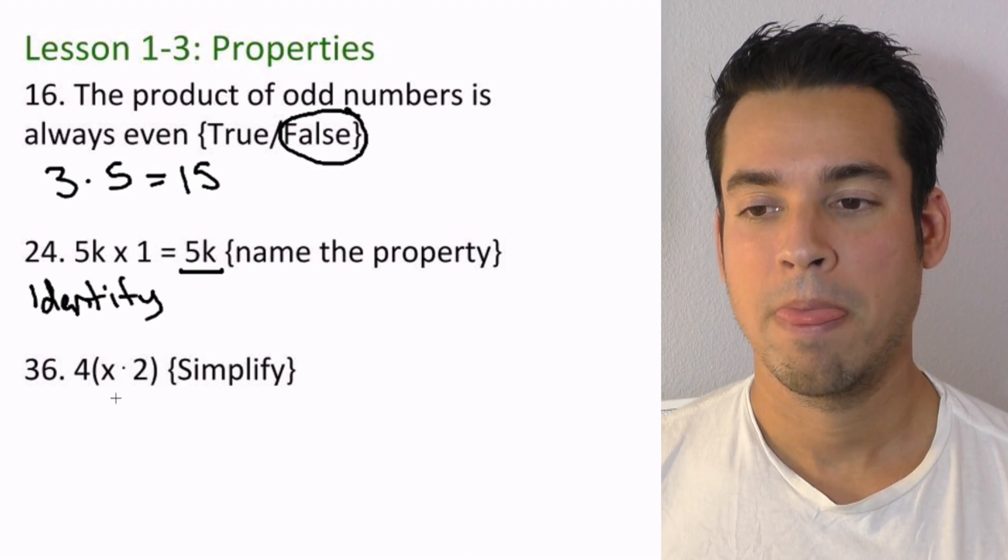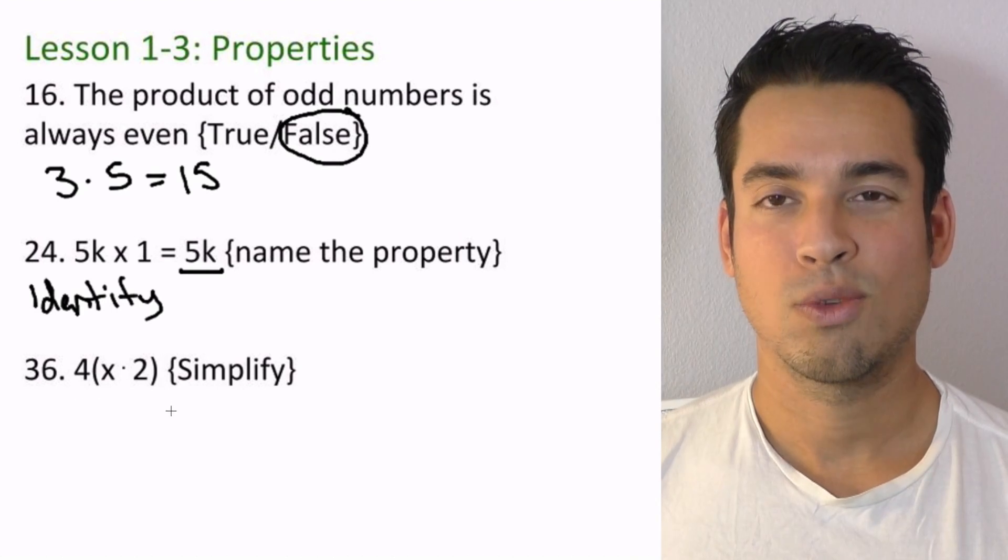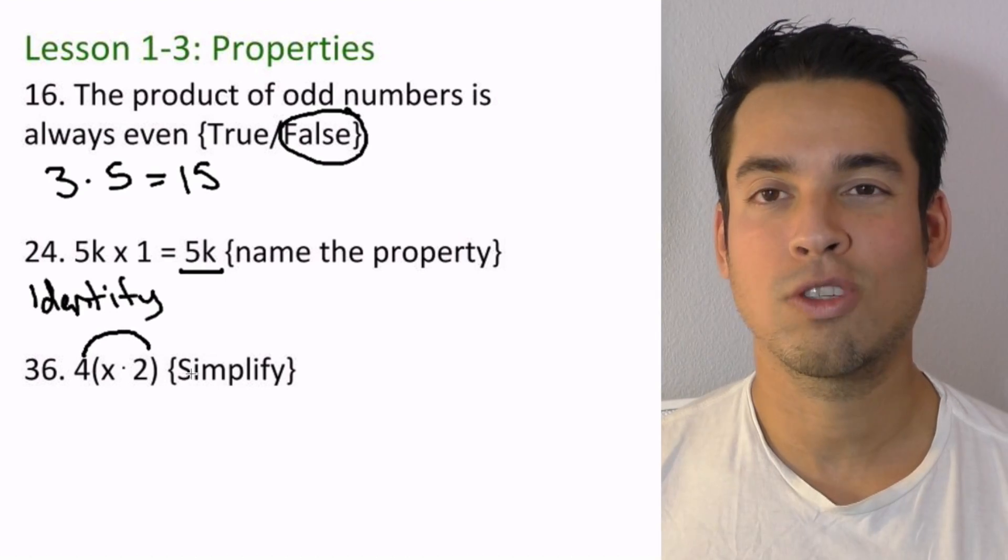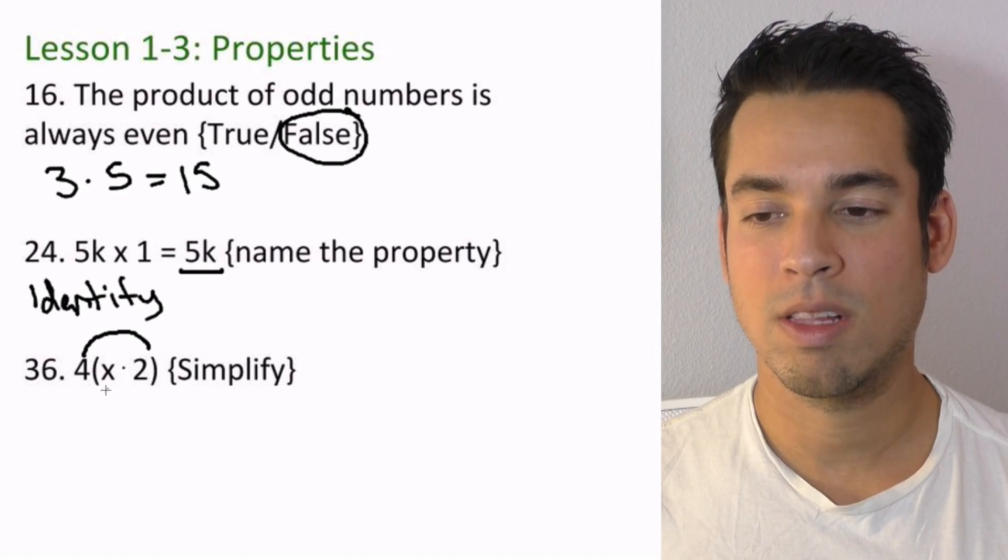To simplify. So what's going on here, we got a 4 times the x times of 2. So what happens is numbers are going to go ahead and multiply numbers, but that x is just going to stay there, just like it would if it was an apple. So what I mean by that is, inside we'd be like...